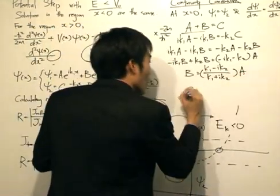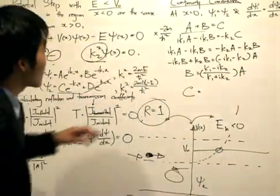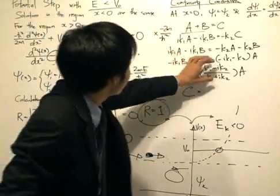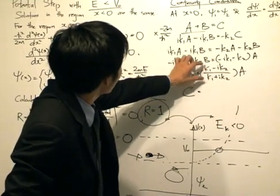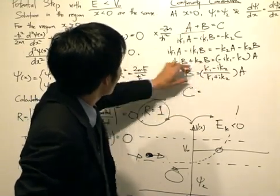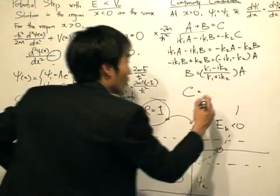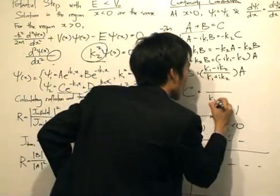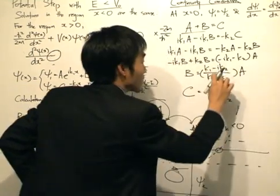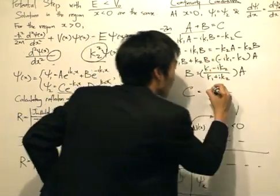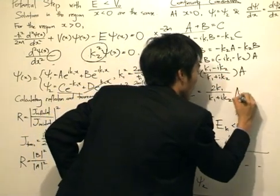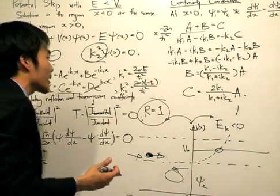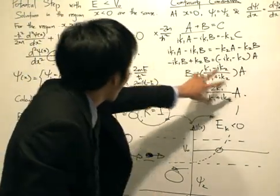For the coefficient c, we substitute b back in — it's just b plus one times a. Adding one to the expression: the denominator stays as k₁ plus ik₂, the ik₂ terms cancel, and we get c equals 2k₁a divided by (k₁ plus ik₂). The continuity conditions allow us to express b and c in terms of a.